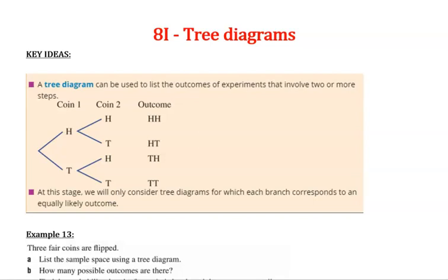A tree diagram can be used to list the outcomes of experiments that involve two or more steps. If we had, firstly, we flipped a coin, we either are going to get heads or tails. So from nothing, there's our first branch of our tree.